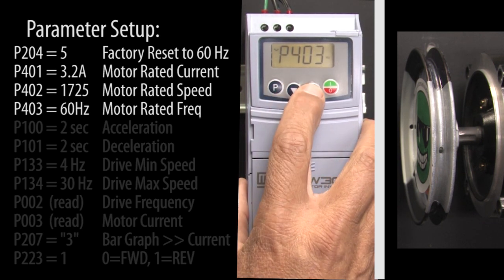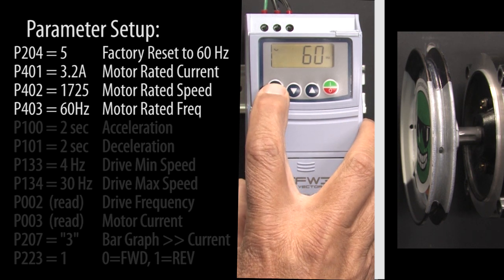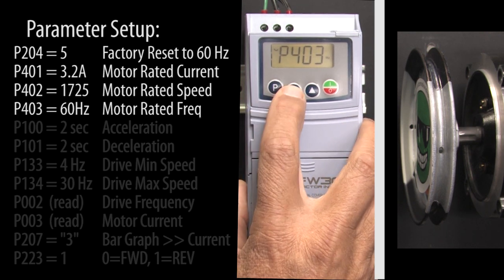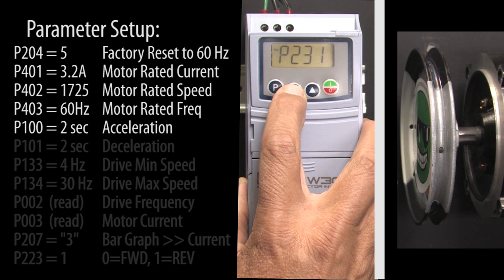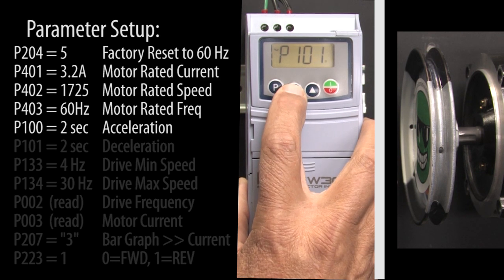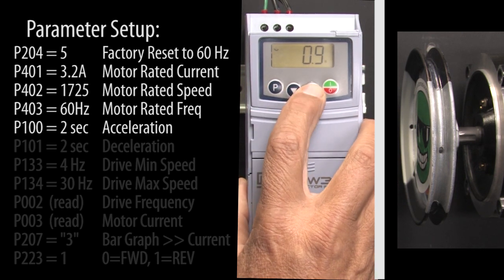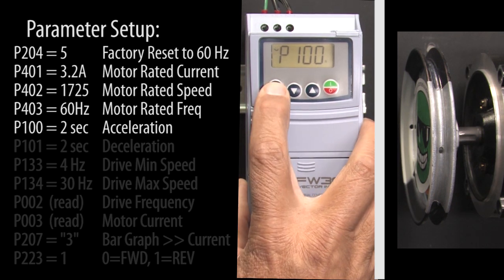Parameter 403 is the motor's max frequency. 60 Hz is what we want so hit P to accept that. Scroll to the acceleration parameter which is 100, hit P to change it, I'll change it to 2 seconds and hit P to accept that value.